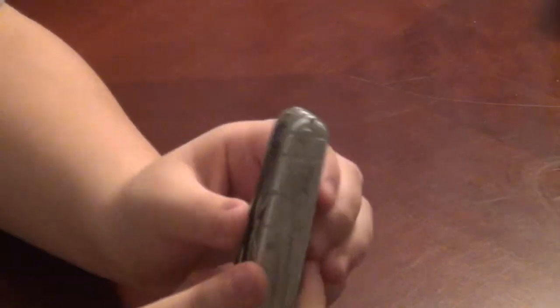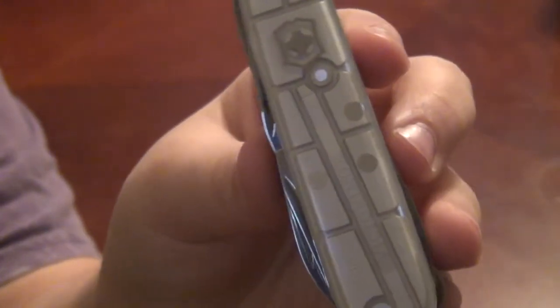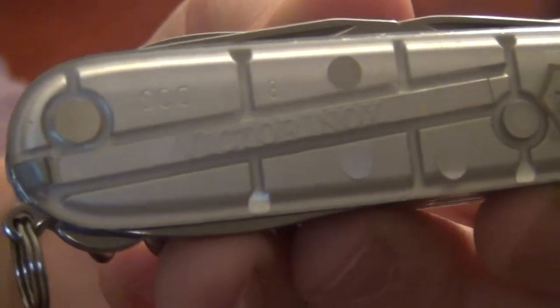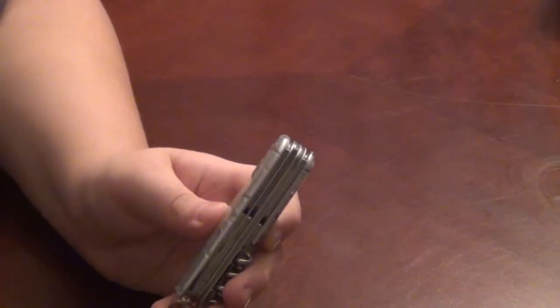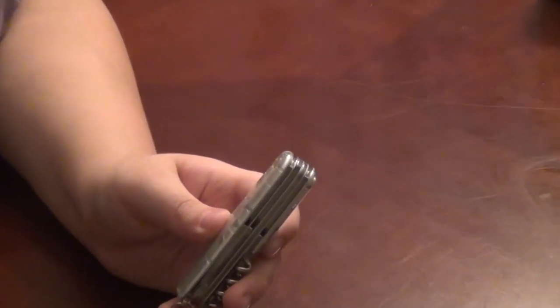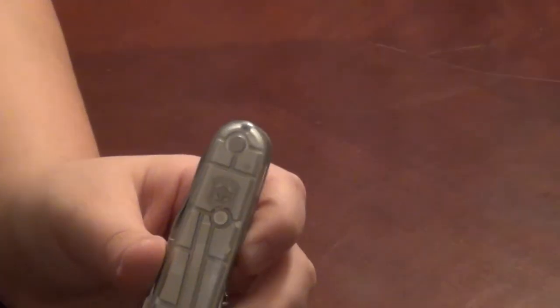Okay, so as you can see, Silver Tech Edition, Huntsman. And you can see it says Victorinox there. And on the other side, it just has my name engraved and stuff. And what I wanted to do was go over everything and how it's been working for me. So let's get into it.